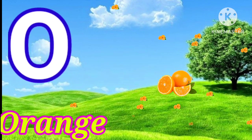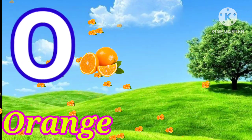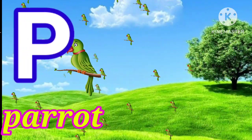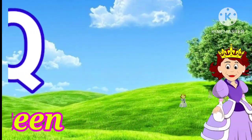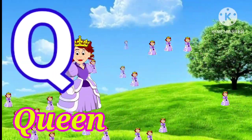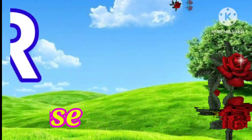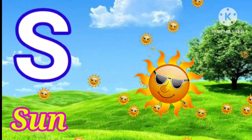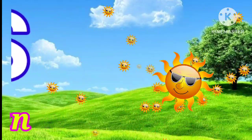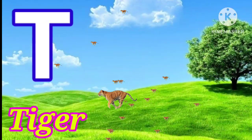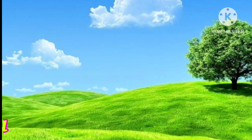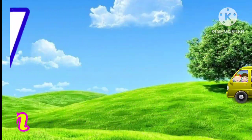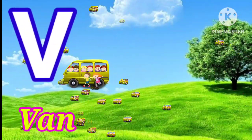O for orange, B for parrot, Q for cute, R for rose, S for sun, T for tiger, U for umbrella, B for band.